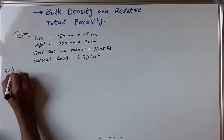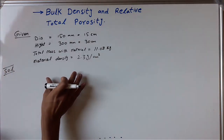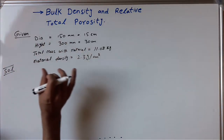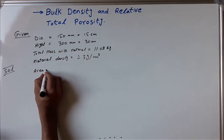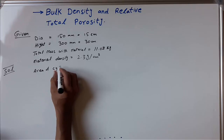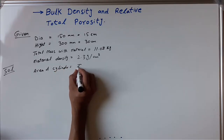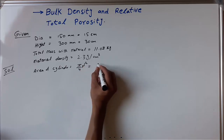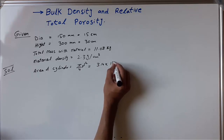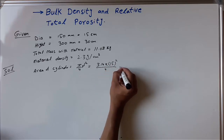Now, how to calculate density and total porosity. First, we have the diameter and we need to calculate the area. The area of the cylinder cross-section is pi over 4 times d squared: 3.14 multiplied by 15 squared, divided by 4.